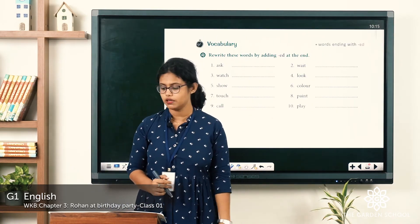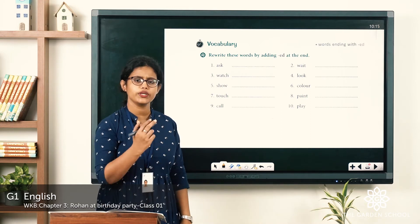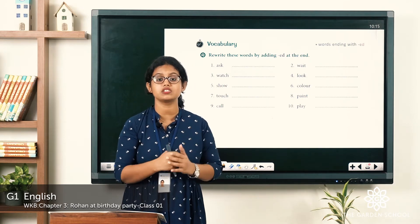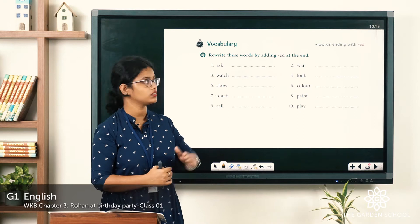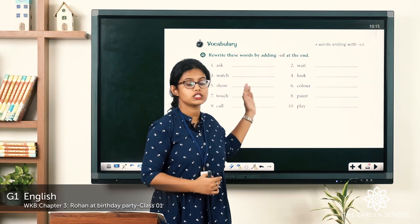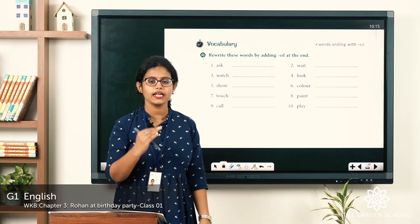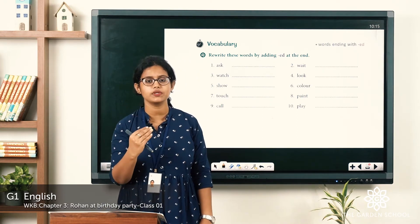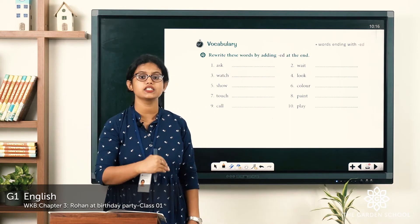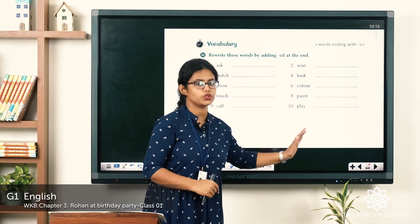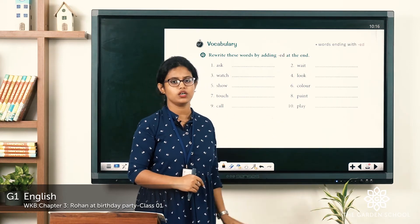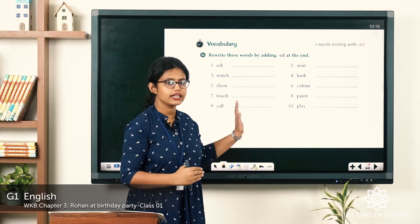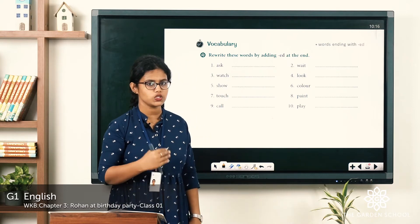Moving on to page number 15. We have learned about action words. A word that we use to represent an action is called an action word. There are 10 action words here. When an action happened in the past, we add '-ed' to the action word. We are going to rewrite these words by adding '-ed'.